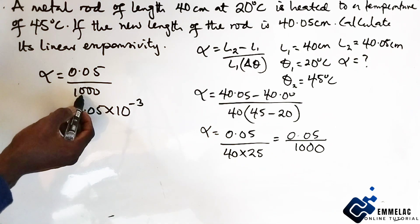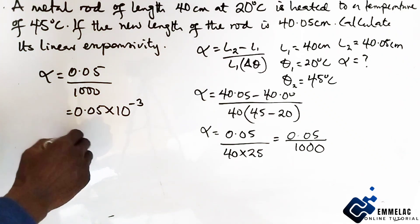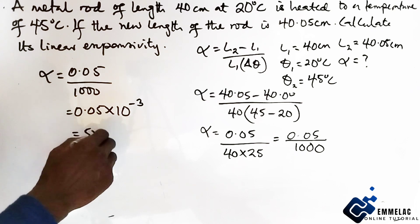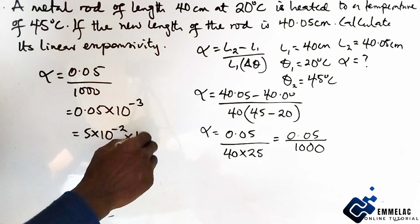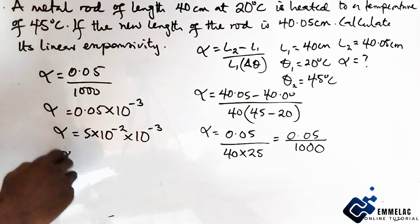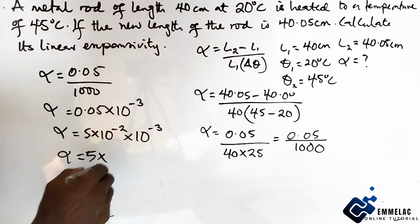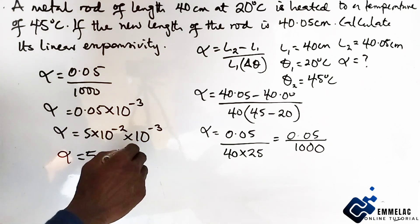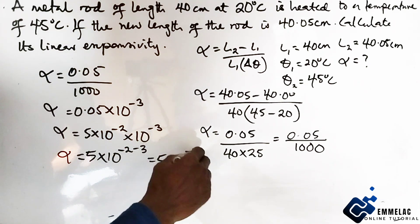So this will further give us 0.05 over 1000. Now this is simply 0.05 times 10 raised to power minus 3. That is if you want to make this linear. To this effect, this will now give us 5 times 10 raised to power minus 2, times 10 raised to power minus 3. Our linear expansivity, simplifying this one using indices, you have 10 raised to power minus 2 minus 3, which will give us 5 times 10 raised to power minus 5.